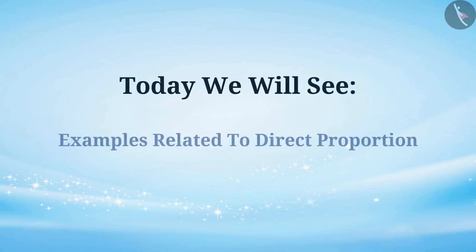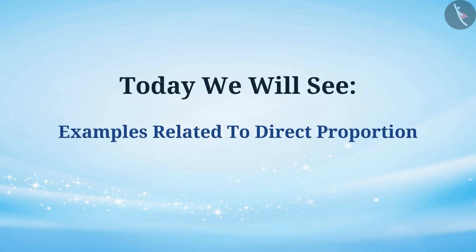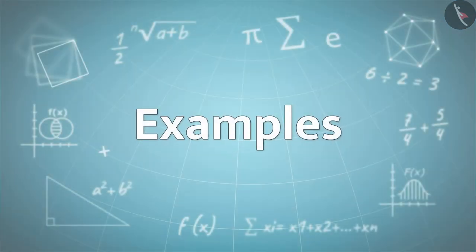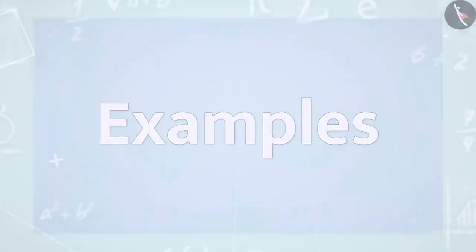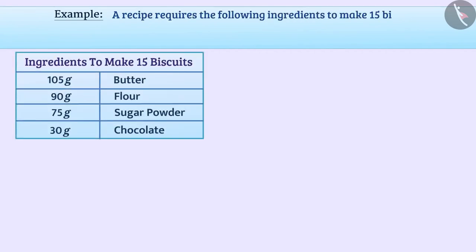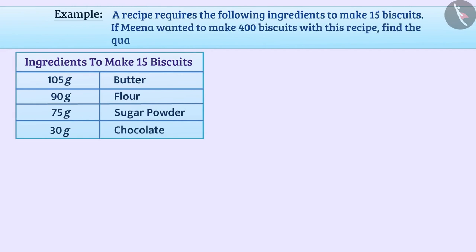Today we will see some more examples related to direct proportion. A recipe requires the following ingredients to make 15 biscuits. If Mina wanted to make 400 biscuits with this recipe, find the quantity of ingredients required.